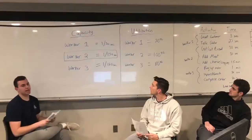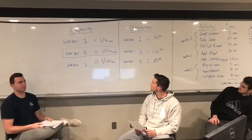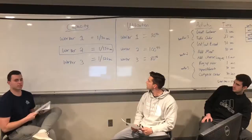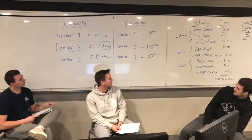To figure out the capacity, we need to divide the one worker at each station by the processing time for each activity. That leads to worker one having a capacity of one over 30 seconds, worker two having a capacity of one over 150 seconds, and worker three having a capacity of one over 120 seconds. From that, we can officially determine worker number two is the bottleneck with the lowest capacity.